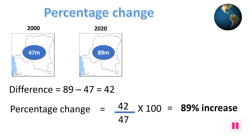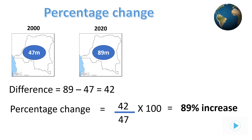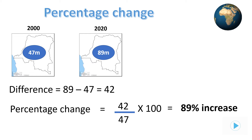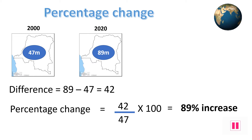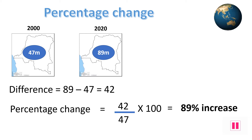Here is a typical example in geography showing the population of the DRC in 2000, which was 47 million, and then the 2020 population of 89 million. The change from 47 million to 89 million is a 42 million increase. This 42 million difference should be divided by the original population of 47 million, then multiply by 100 to calculate the percentage increase.